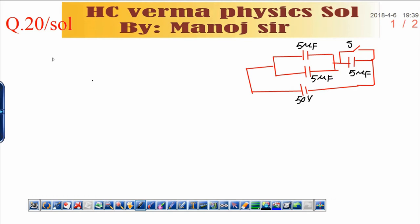Each capacitor shown in the figure has a capacitance of 5 microfarad. The EMF of the battery is 50V. How much charge will flow through AB if the switch S is closed.